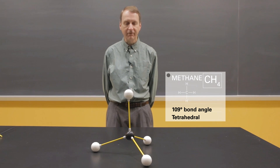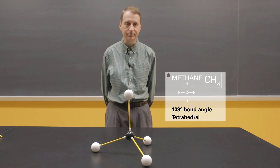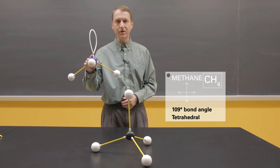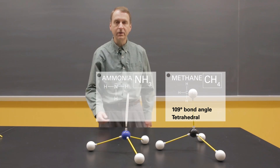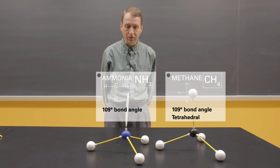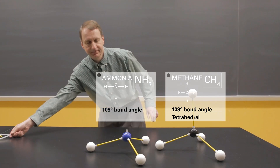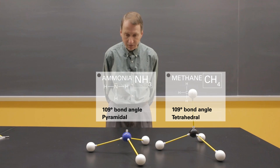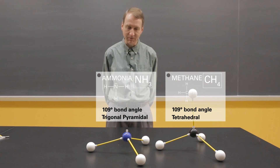Another molecule that has four electron groups around a central atom is ammonia. Looking at the Lewis structure of NH3, we see three nitrogen-hydrogen single bonds and a lone pair. Here is the model of ammonia. Setting it next to CH4, we again see 109-degree bond angles. But if I want to use a word to describe the shape, I'm going to remove the lone pair. This is clearly a different shape, and the term I'm going to use is trigonal pyramidal — the nitrogen, the blue sphere, is not in the same plane as the three white hydrogen spheres.